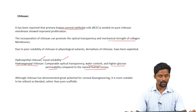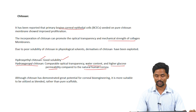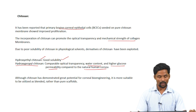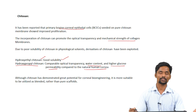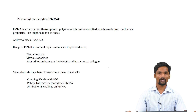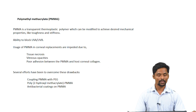Although chitosan has demonstrated great potential for corneal tissue engineering, it is not used alone. It is blended with other polymers. So far we have discussed naturally occurring polymers; now we will talk about a few synthetic polymers.